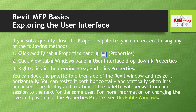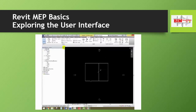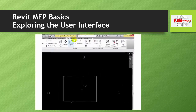You can dock the palette to either side of the Revit window and resize it horizontally. You can resize it both horizontally and vertically when it is undocked. The display and location of the palette will persist from one session to the next for the same user. For more information, search 'Dockable Windows' in the Info Center located at the top right of Revit.